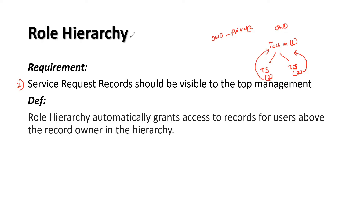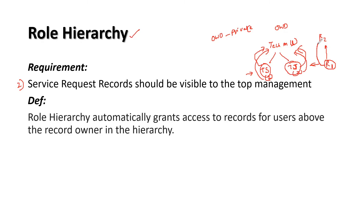So that is why this tech manager should be able to see those records. How can we do that? With the help of our role hierarchy. Role hierarchy automatically grants access to the records for the users above the record owner in the hierarchy. So whatever records are owned by people in a lower role will be automatically shared with the people above their role. In short, the manager can see the records owned by the technician engineers. So that is our role hierarchy.